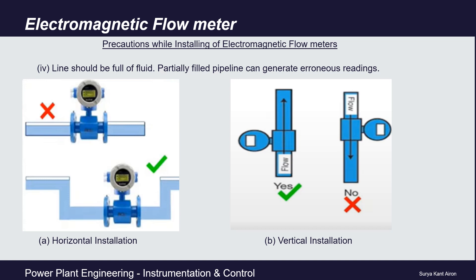The third requirement is that the pipeline must be fully filled. In the case of a partially filled pipeline, the measured output will be incorrect. Thus, during horizontal installation, electromagnetic flow meters are installed with a U-shaped arrangement so that the line is always fully filled at the cross-section where the flow meter is installed. For vertical installation, the flow should be from bottom to top.